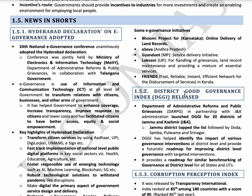Some initiatives of e-governance include the Bhoomi Project of Karnataka, which made land records online; E-Seva of Andhra Pradesh, where people can apply and register online for public services; Gyan Dhoot of Madhya Pradesh for service delivery; Lokwani of Uttar Pradesh for solving public issues, land record maintenance, and essential services; and the FRIENDS Initiative of Kerala — Fast, Reliable, Instant, Efficient Network for the Disbursement of Services.